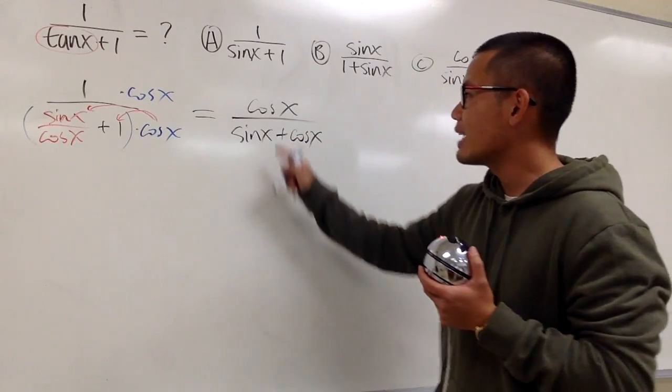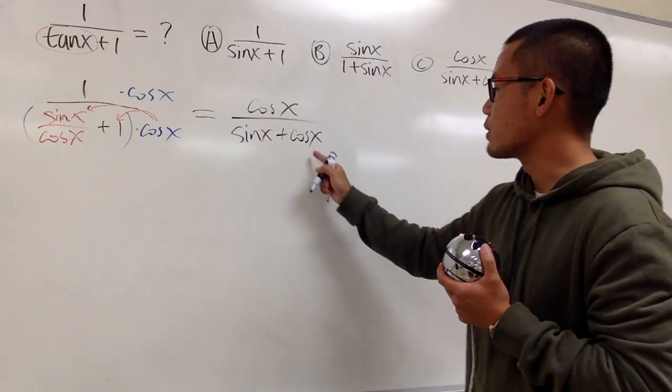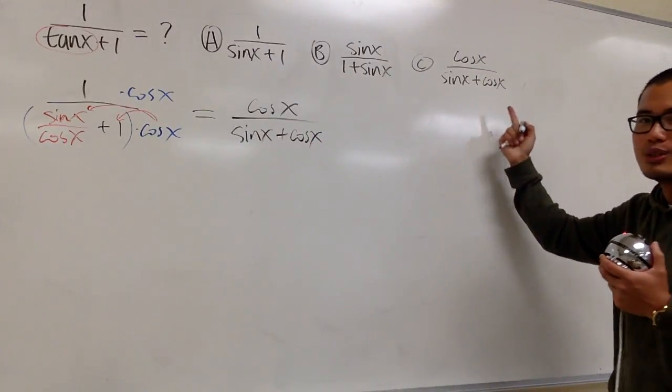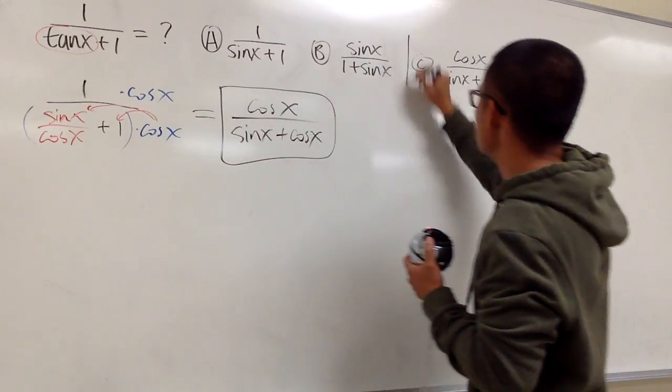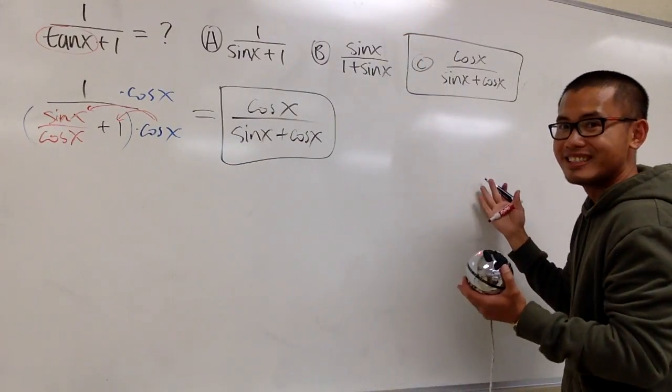At the end, we see that we have cosine x over sine x plus cosine x, and that's answer choice C. So we know we are done. This right here will be the answer.